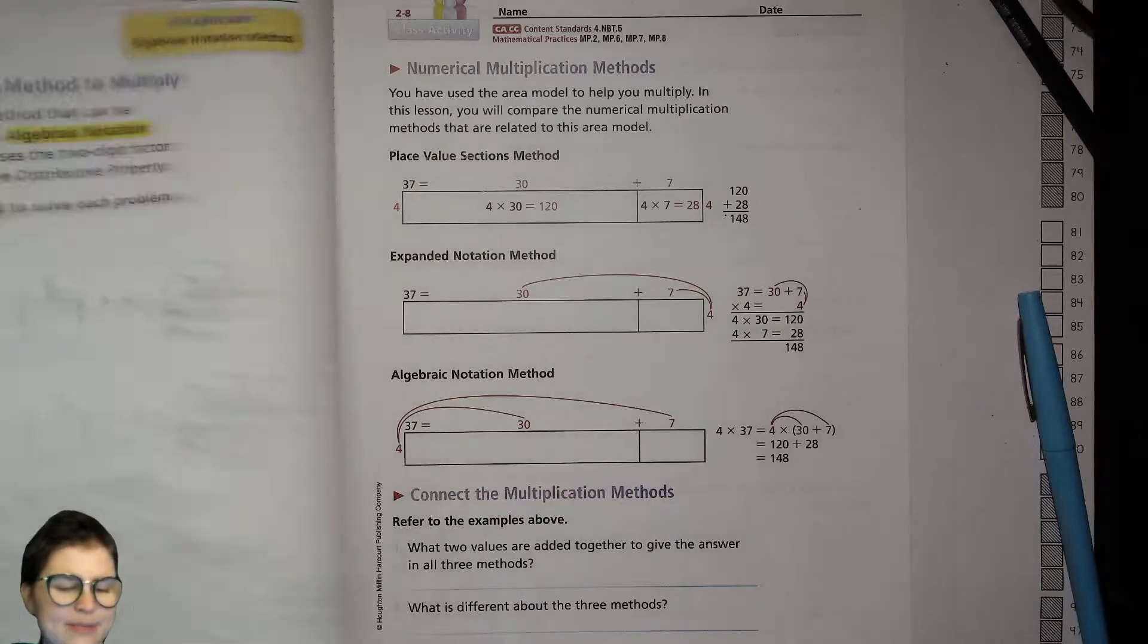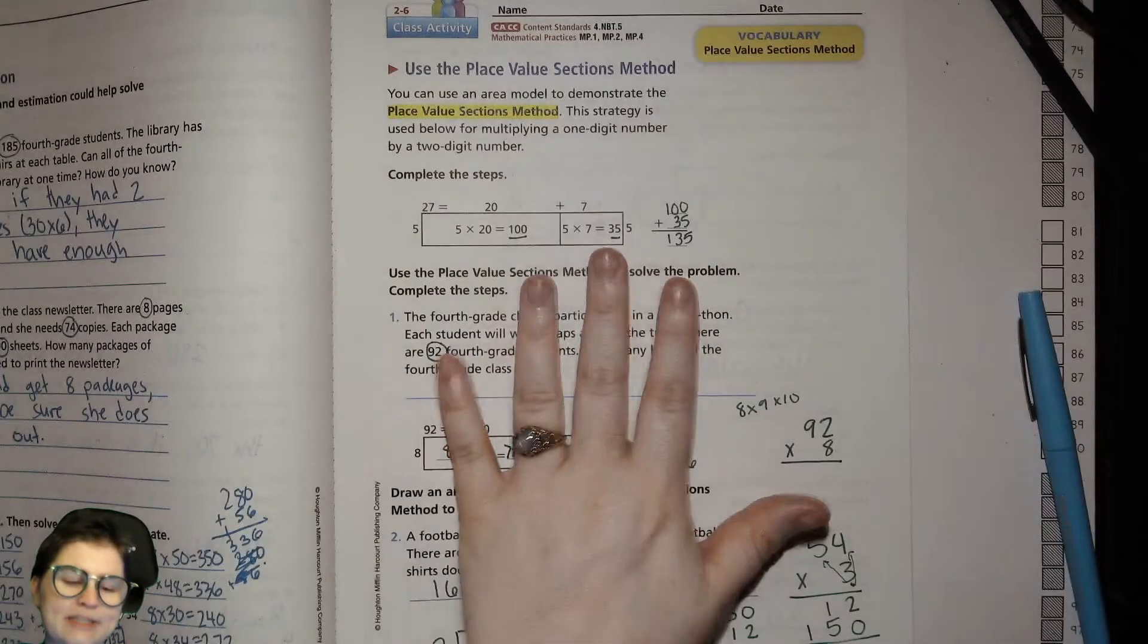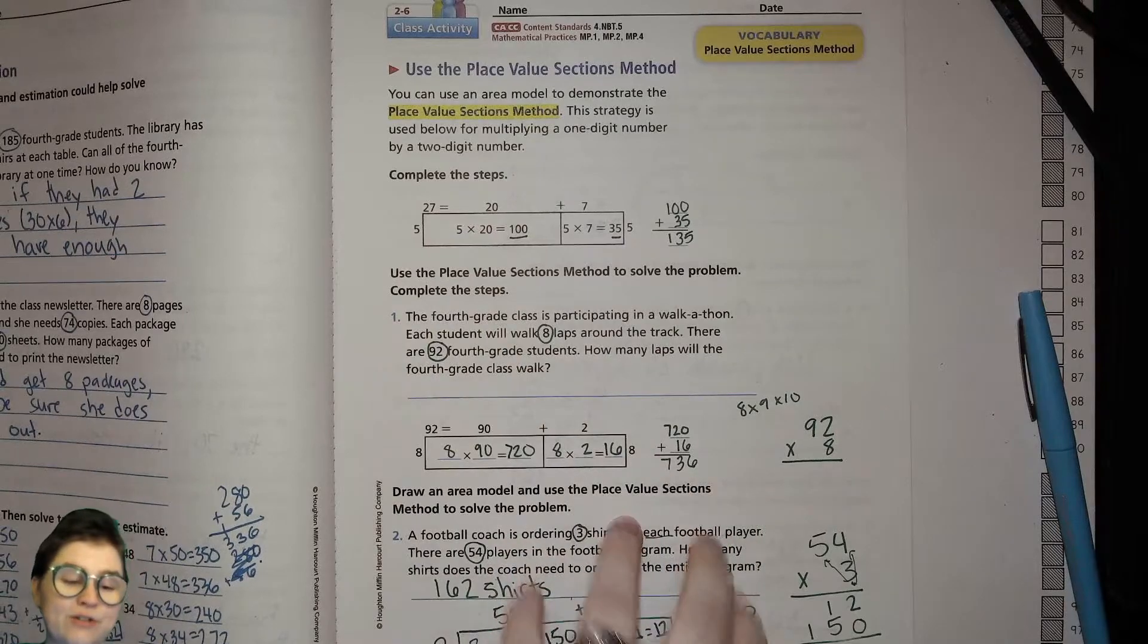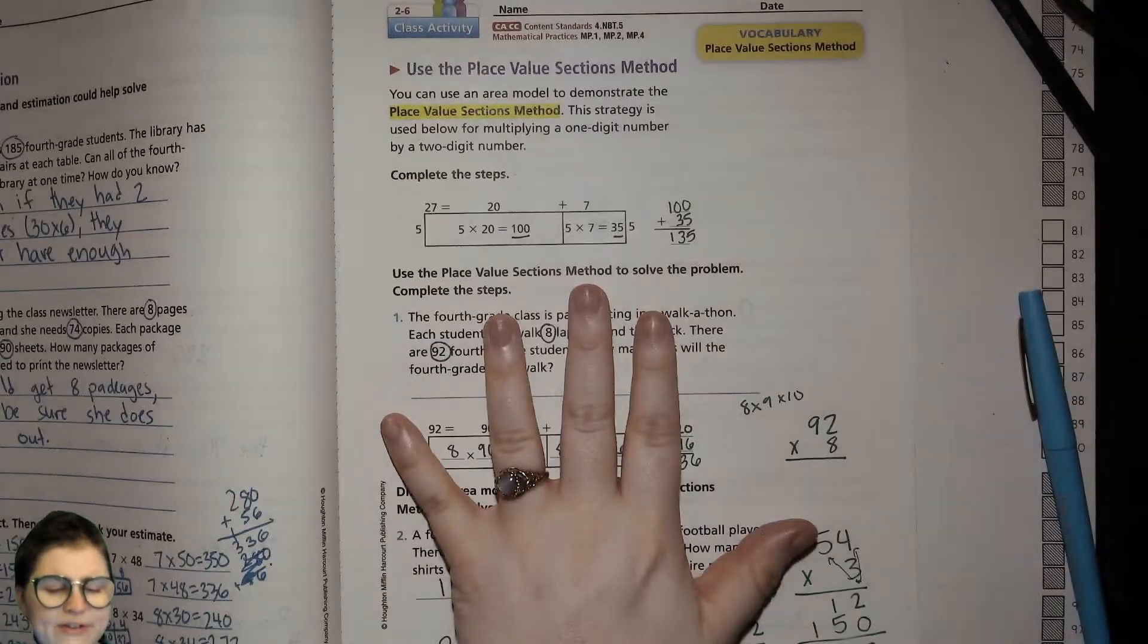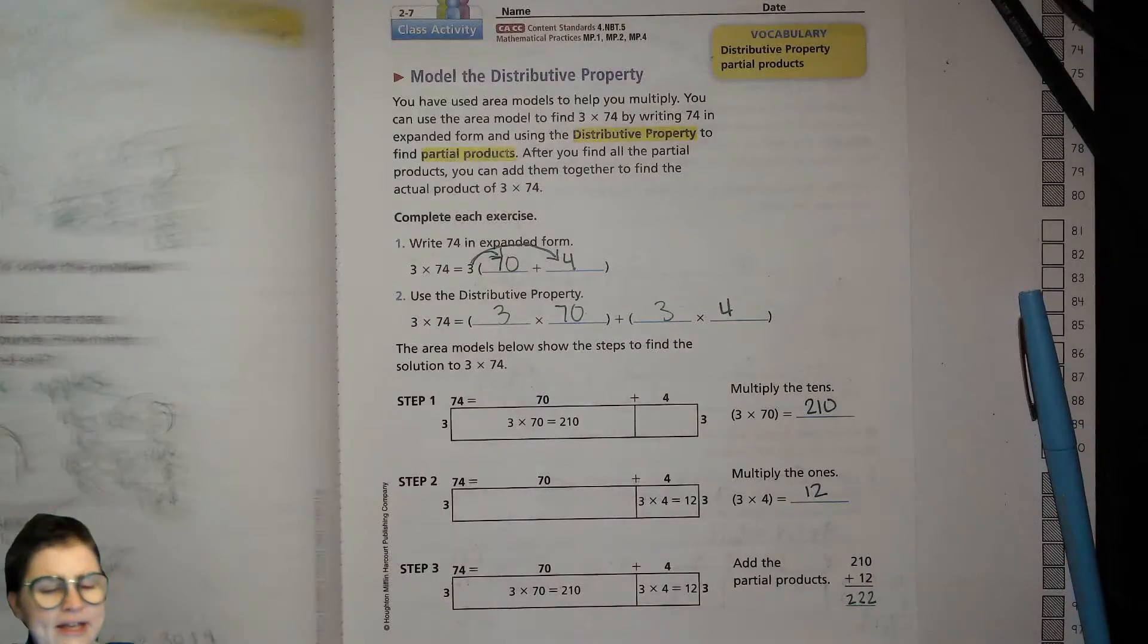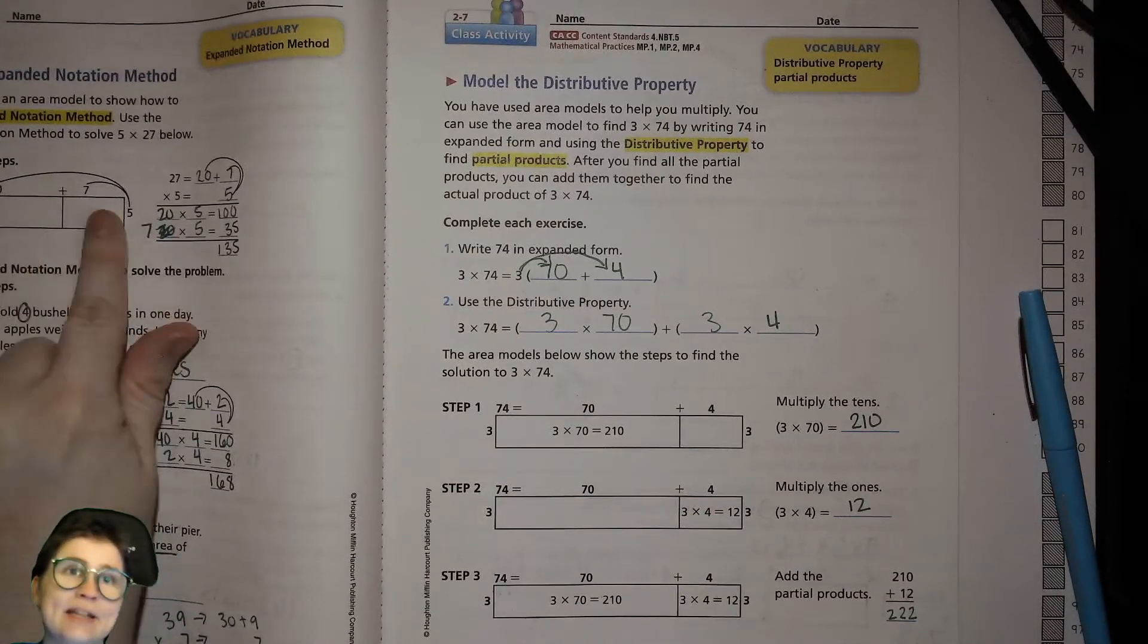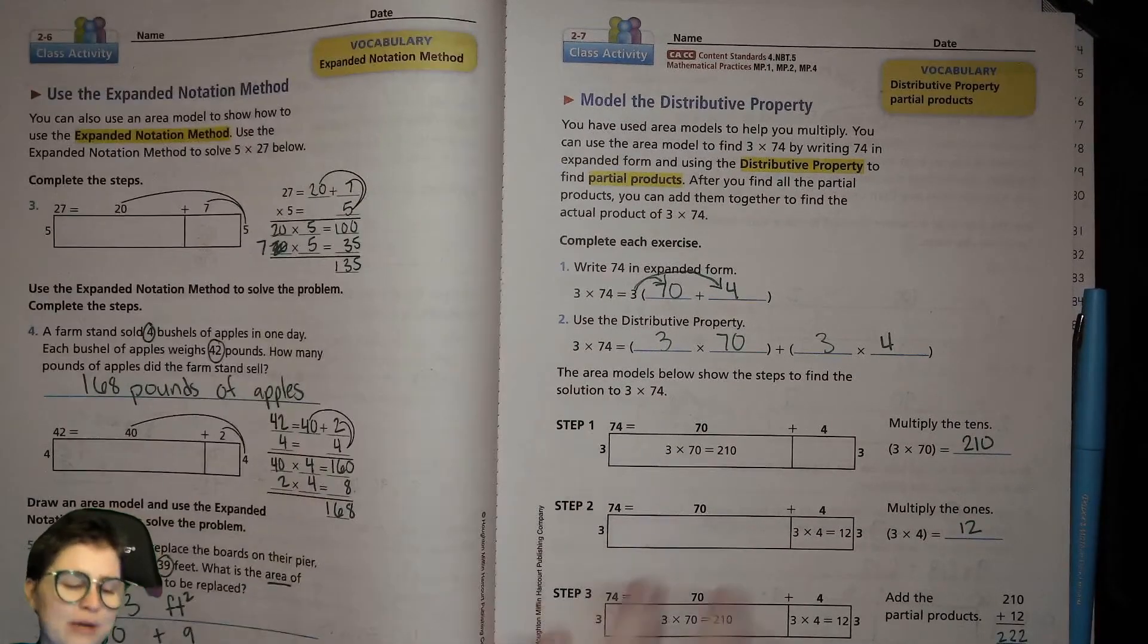In the past couple lessons we were exploring some different ways to represent multiplication problems, especially when you have a two-digit factor. There's the place value sections where in each section inside your model you're putting your partial products. In the expanded notation method, rather than writing it inside the boxes, you're doing it off to the side and then setting up your addition problem like that.